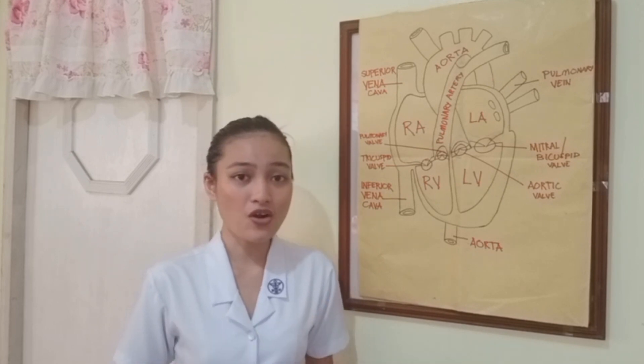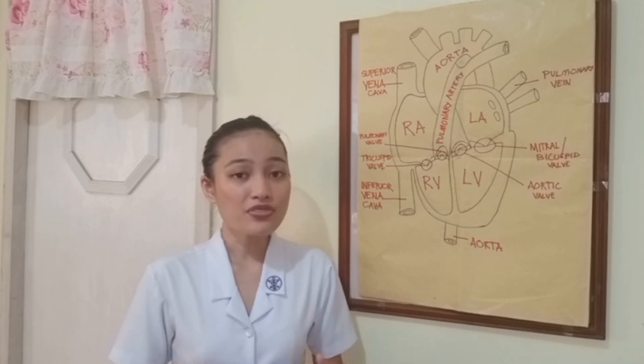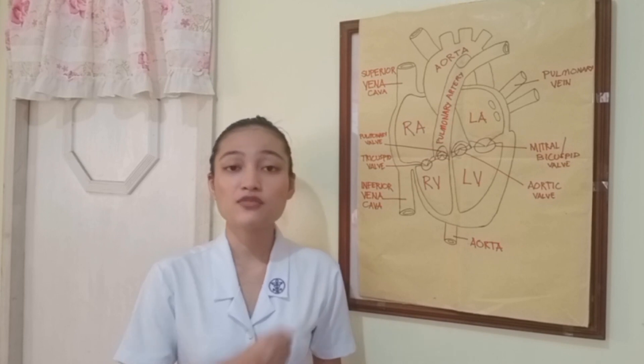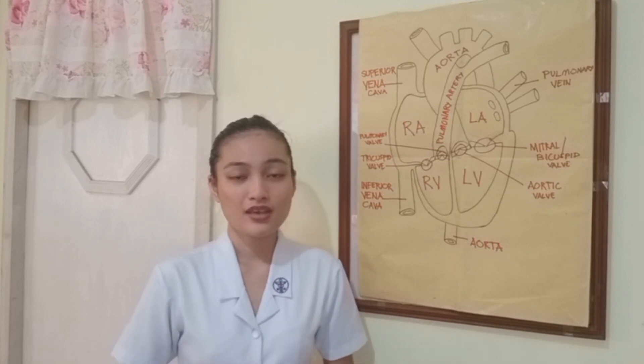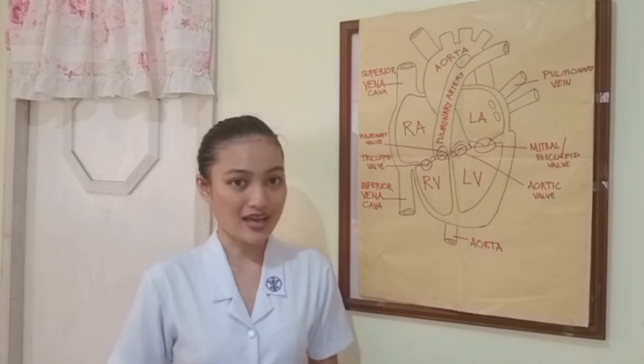Now how big is the heart? Everyone's heart is slightly different. On average, an adult's heart is about the size of two clenched fists, while in children it's about the same size as one clenched fist. As to the question of how much does it weigh, on average in adults it weighs about 10 ounces, but that still depends on your body size.